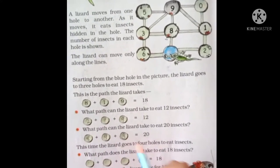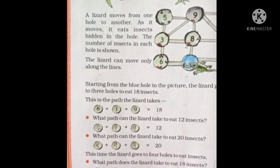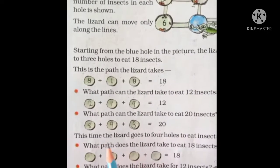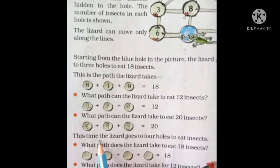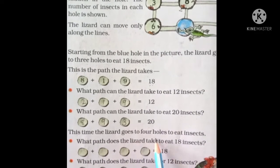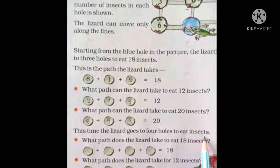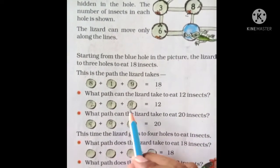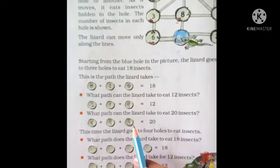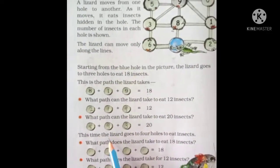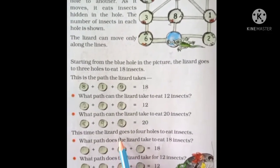Now everyone write this answer in your textbook first. This time the lizard goes to four holes to eat insects. Before it was three holes; now we will add four numbers. Next question.